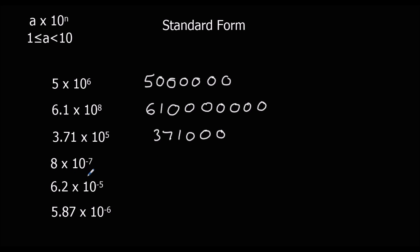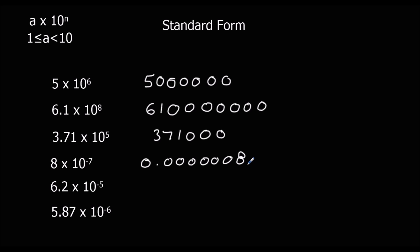8 times 10 to the power of minus 7: a minus power means we're dividing by 10. Once goes to 0.8, twice to 0.08. Continuing — 5, 6, 7 zeros before the 8. So it's 0.0000008, with the 8 in the 7th decimal place.